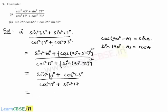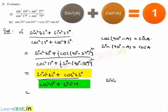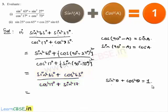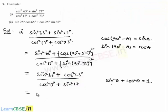The numerator and denominator are both in the form sin²θ + cos²θ. From the identity sin²θ + cos²θ = 1, we substitute, and the expression becomes 1 divided by 1, which equals 1.